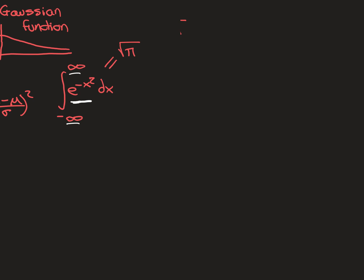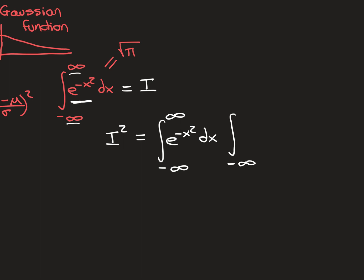So we have to apply a cleverer method — the one concocted by Gauss. We call the integral I, and instead of finding I directly, we find I squared. That would be the integral from negative infinity to infinity of e^(-x²) dx, multiplied by the same integral written with a different dummy variable: the integral of e^(-y²) dy.